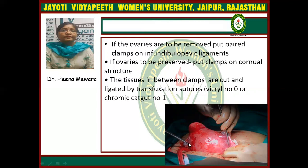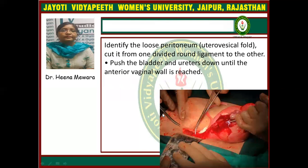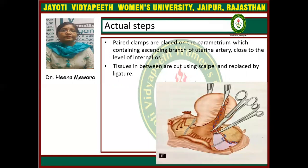This is the clamp which is put on the cornua of the uterus. After that, identify the loose peritoneum — the uterovesical fold. Cut it from one divided round ligament to the other. Push the bladder and ureters down until the anterior vaginal wall is reached. Paired clamps are placed on the parametrium containing the ascending branch of the uterine artery close to the level of internal os. Tissue in between is cut using scalpel and replaced by ligature. This diagram shows the two clamps placed on the ascending uterine branch, and tissue in between is cut and replaced by transfixation suture.